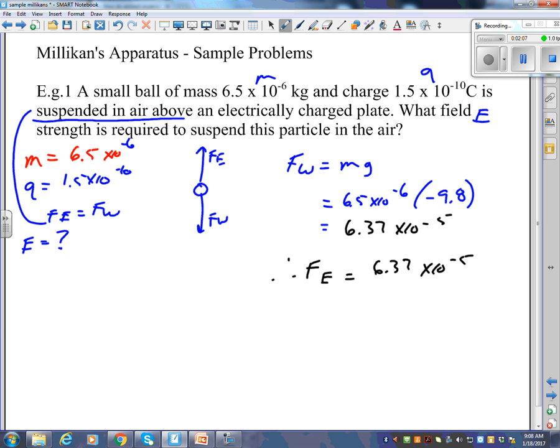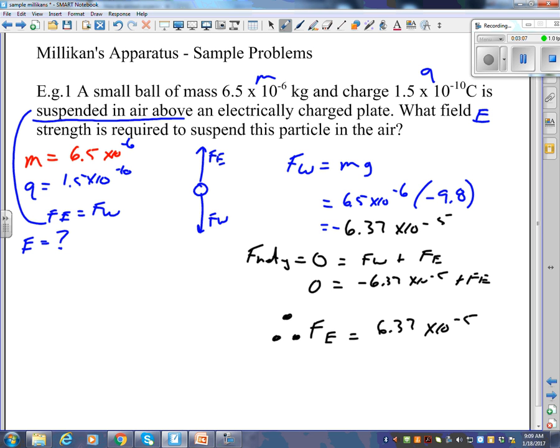three dots in a triangle, the Fe is 6.37 times 10 to the minus 5. Actually, three dots in a triangle means therefore. Now actually, I'm surprised no one asked, that really should be negative, right? This should be negative because it's down, which makes the Fe positive because it's up, right? Because of this. Really what's happening in this intermediate step here is this. Really, F net Y is zero, right? The net force Y is zero, and that is made up of the weight force plus the electric force. So zero equals minus 6.37 times 10 to the minus 5 plus Fe. Or in other words, Fe is this, right? I mean you can skip this step if you want, but you've got to understand what's going on.